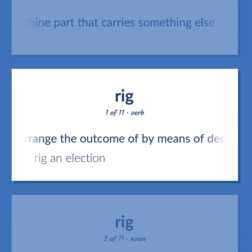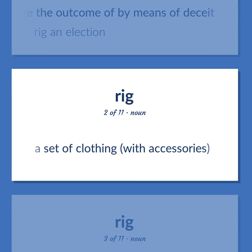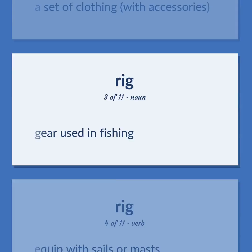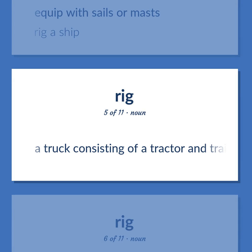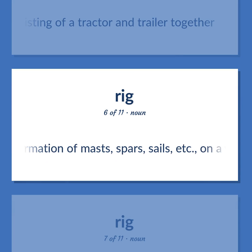Rig: To arrange the outcome of by means of deceit — rig an election. A set of clothing with accessories. Gear used in fishing. To equip with sails or masts — rig a ship. A truck consisting of a tractor and trailer together. Formation of masts, spars, sails, etc. on a vessel.